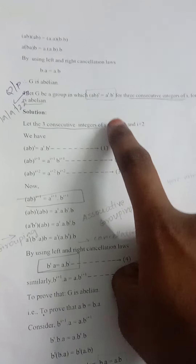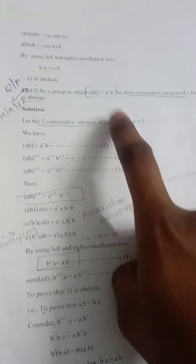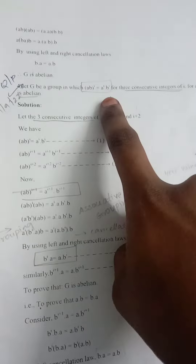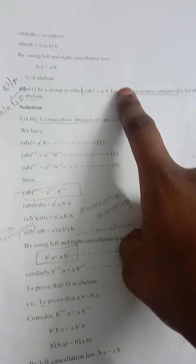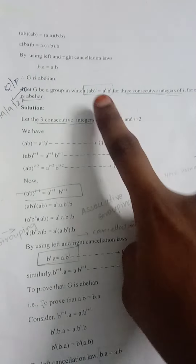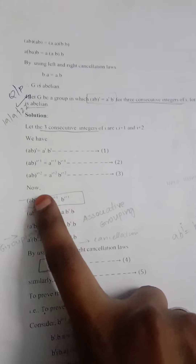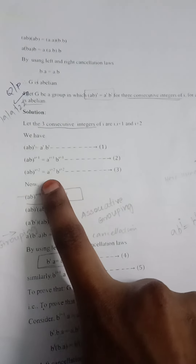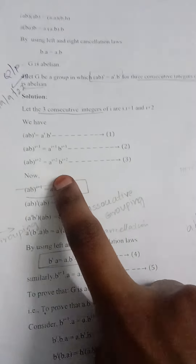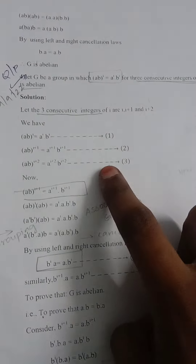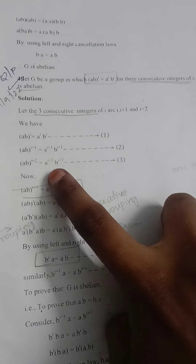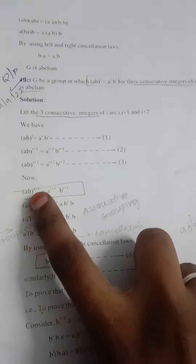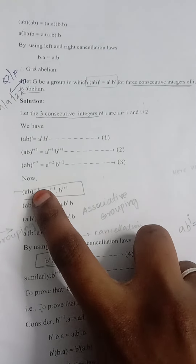From this we write three equations: (ab)^i = a^i * b^i, (ab)^(i+1) = a^(i+1) * b^(i+1), and (ab)^(i+2) = a^(i+2) * b^(i+2).